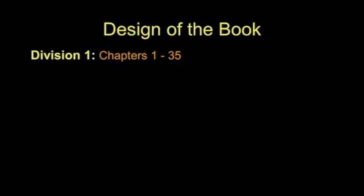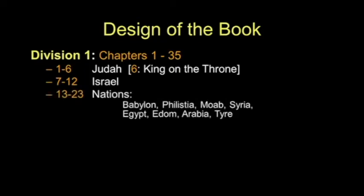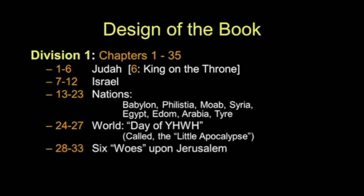The design of the book is in three major pieces. Division one is 35 chapters: the first six about Judah, chapter 6 with the king on the throne, then Israel, then eight specific nations, then the Day of the Lord. Chapters 24 through 27 are called by some scholars "the little apocalypse" — like a miniature Revelation. We're going to talk about the six woes upon Jerusalem, and we'll discover those six woes are upon us today. Then the tribulation and the millennium. That's the first major section.